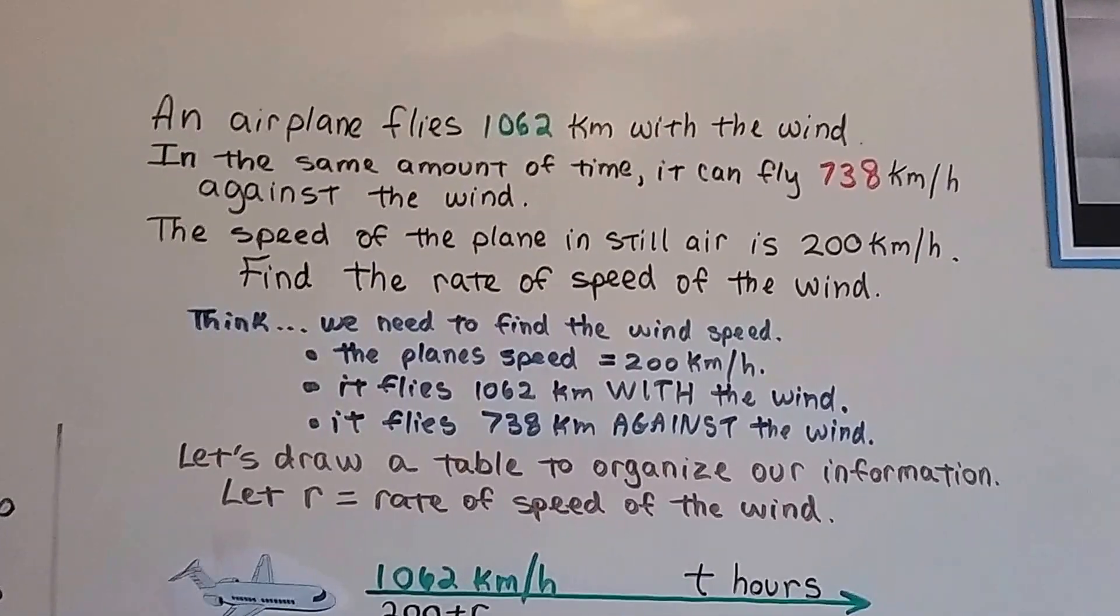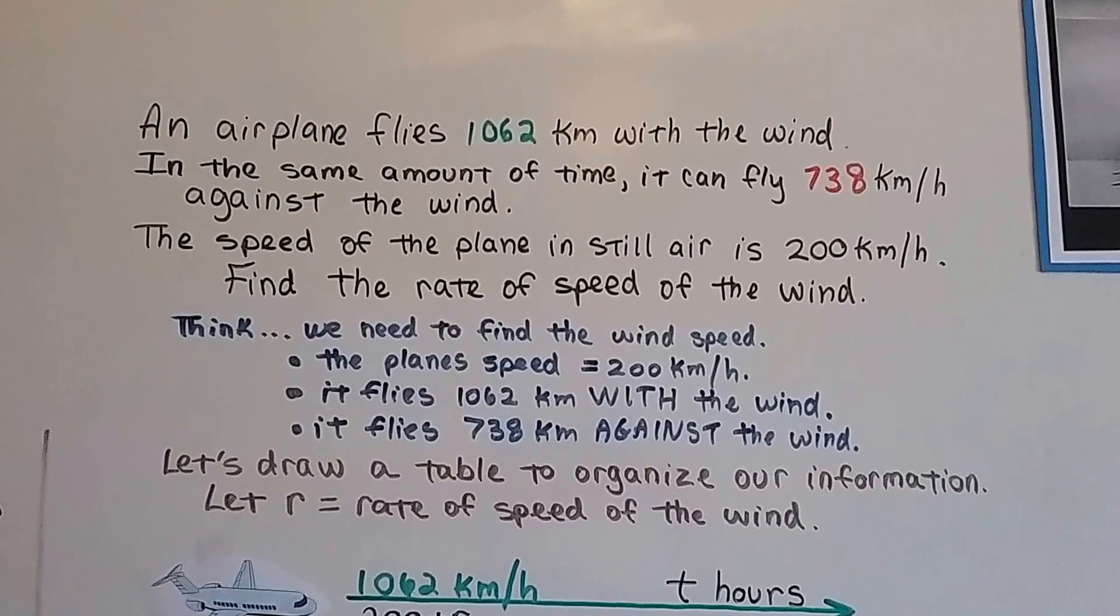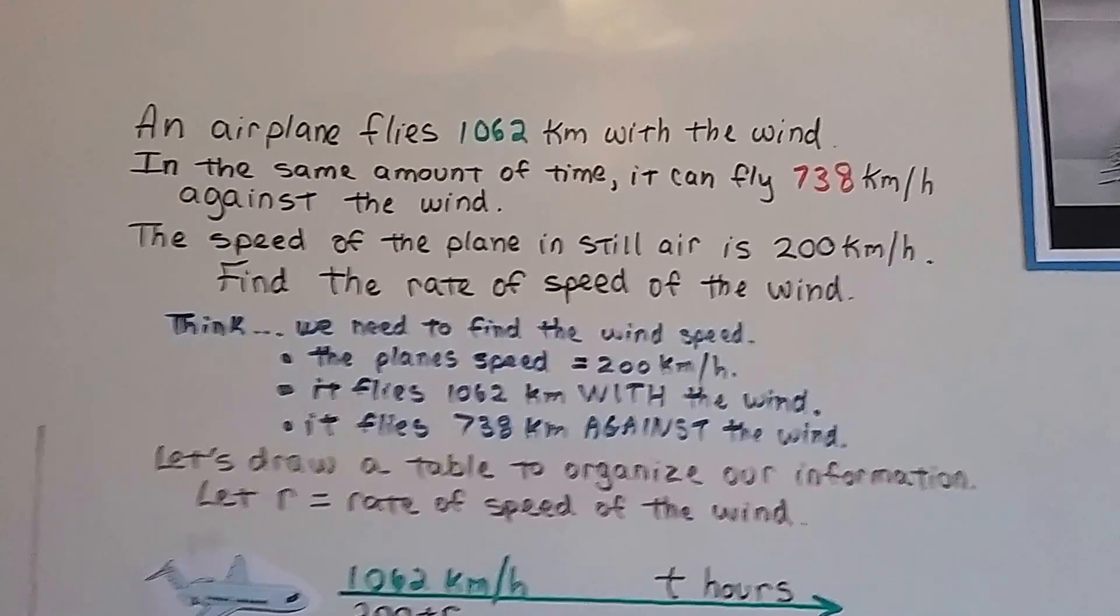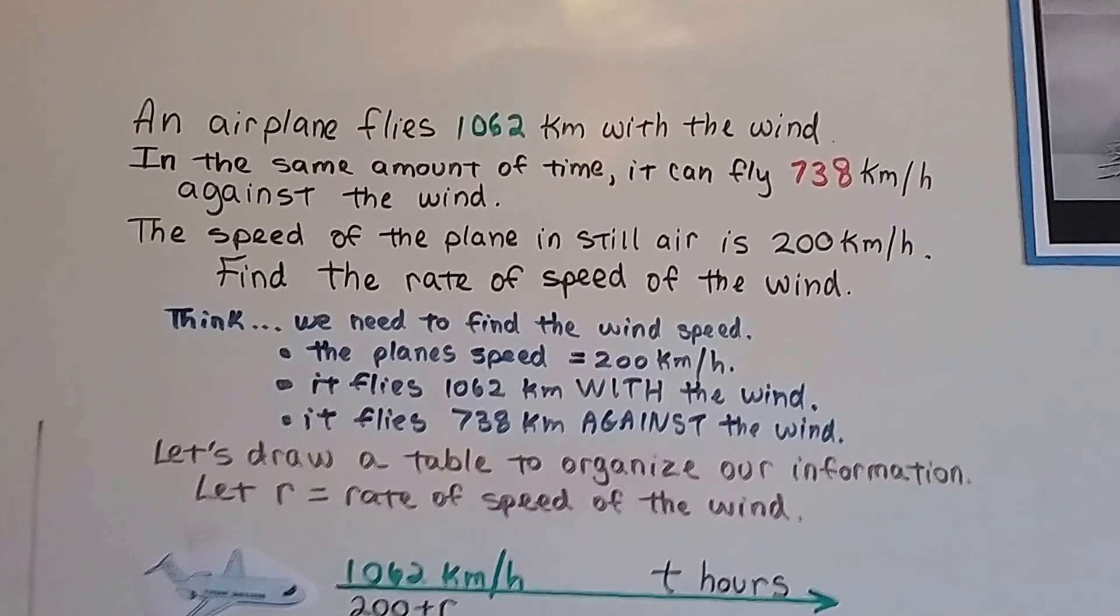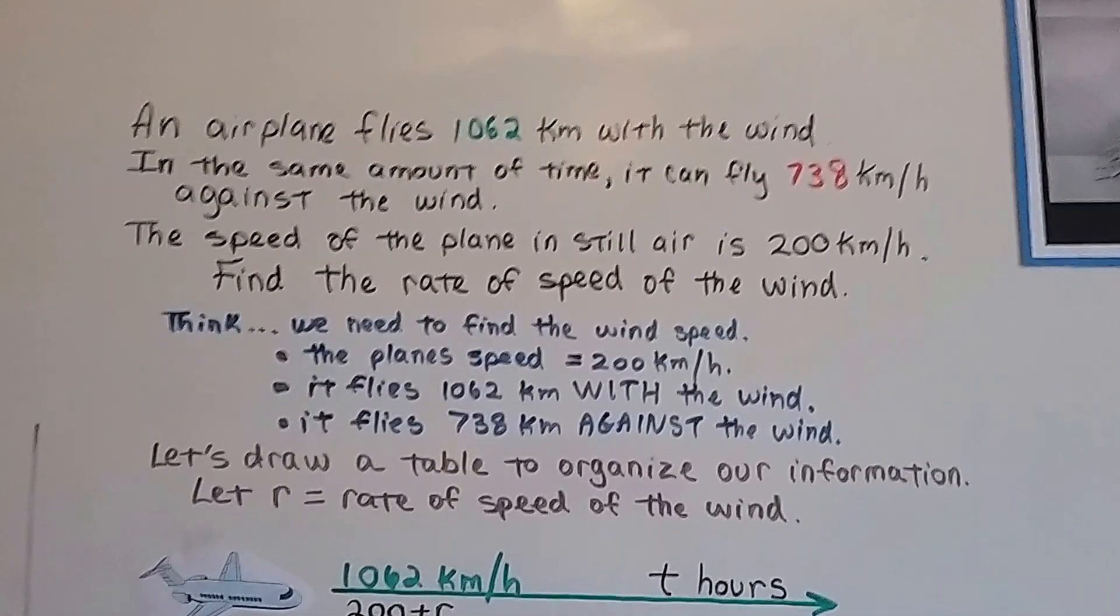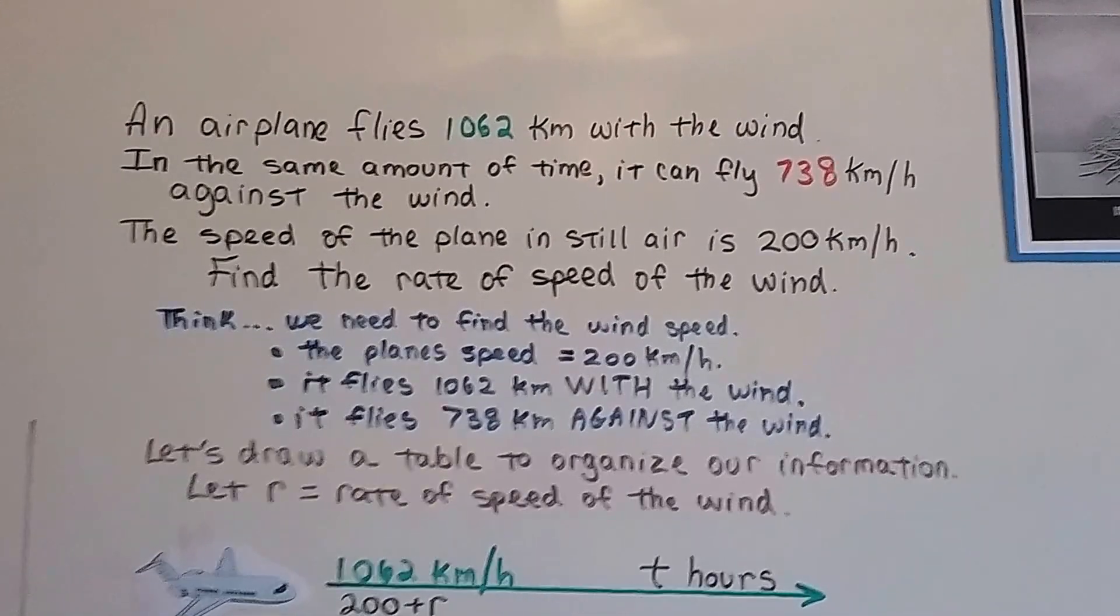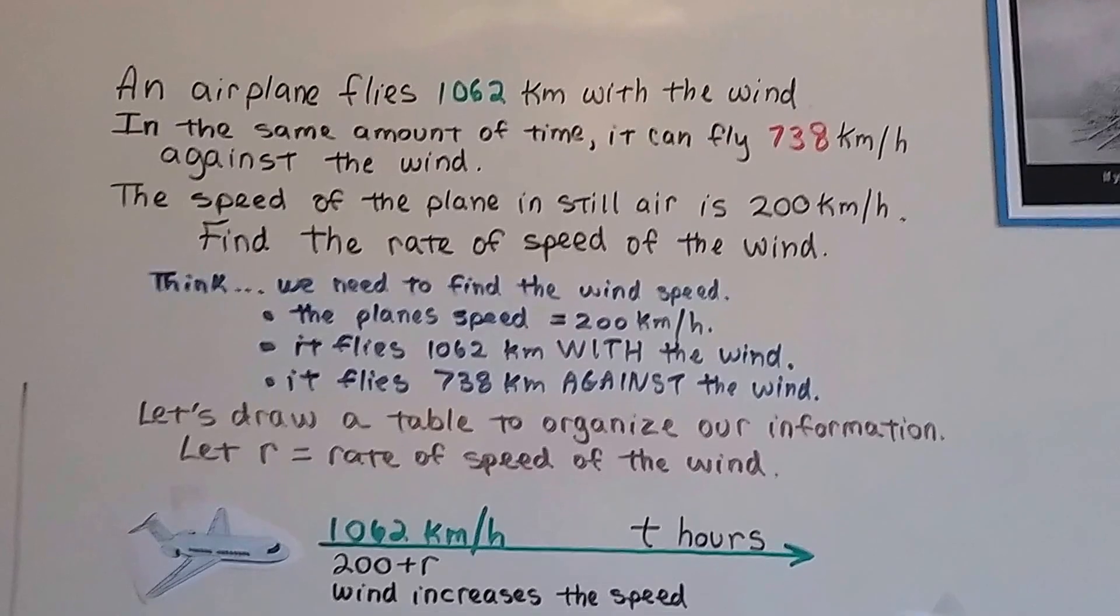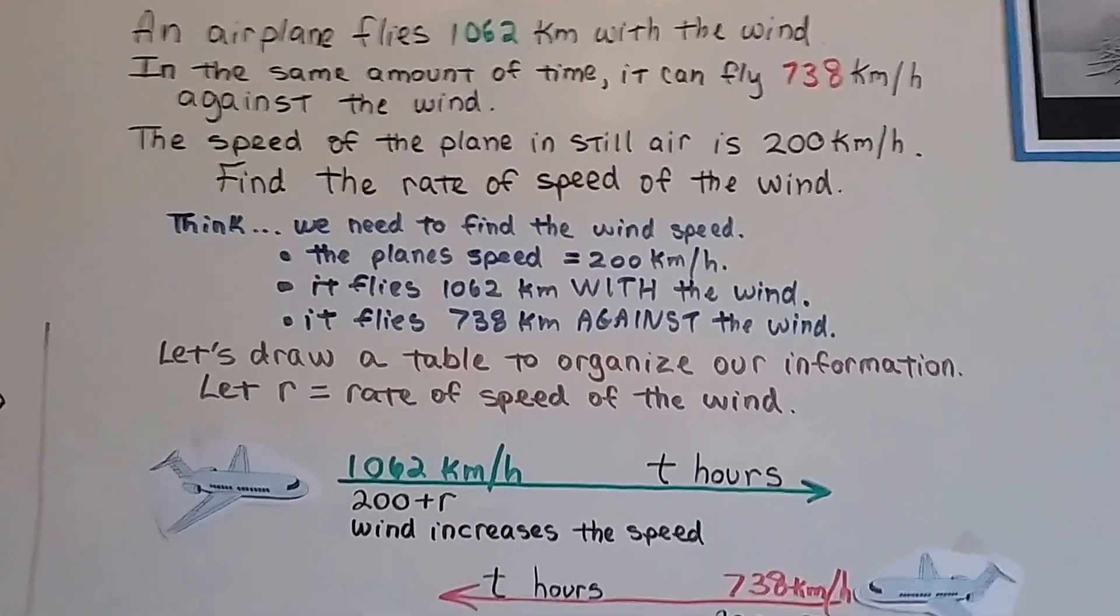Here's one that's a little bit more involved, and we're going to draw pictures and make a table. So an airplane flies 1,062 kilometers with the wind. In the same amount of time, it can fly 738 kilometers against the wind. So the speed of the plane in still air is 200 kilometers per hour. Find the rate of speed of the wind. So we think, we need to find out what that wind speed is. And the plane's speed is 200 kilometers per hour. It flies 1,062 with the wind. It flies 738 against the wind. So let's draw a table to organize our information. We're going to let r equal that rate of speed of the wind. We could have used s for speed. We could have used w for wind. I'm going to use an r, so we can stick with our drt thing.